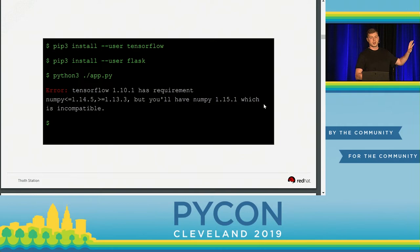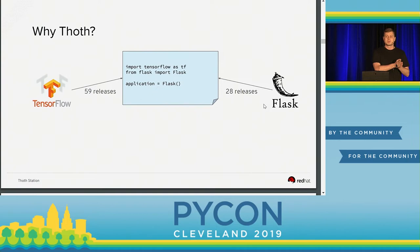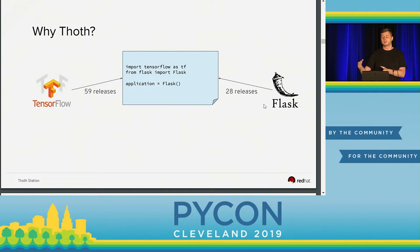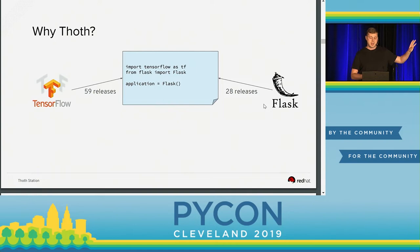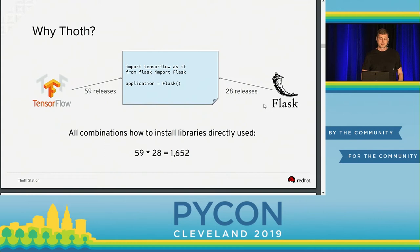If we take a look at what pip did in the background: we issued pip install TensorFlow, pip searched PyPI and found 59 releases of TensorFlow. Since we did not provide any version range specification, it automatically picked the latest one. The same was for Flask — it searched PyPI, found 28 releases, and picked the latest one. If we do the math, there are at least 1,600 combinations of how you can install different versions of TensorFlow with different versions of Flask.